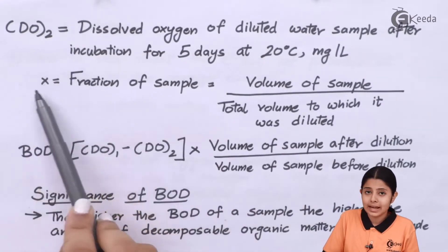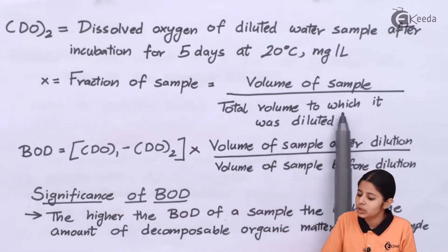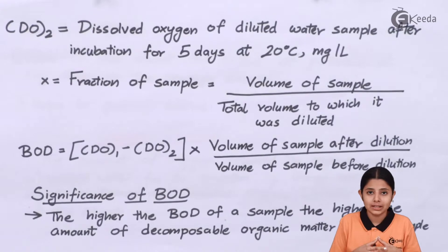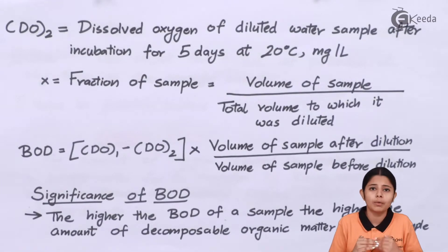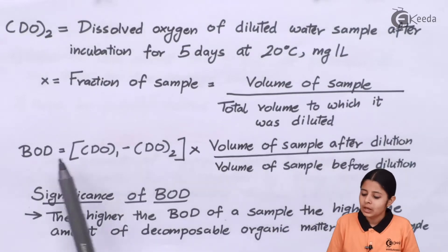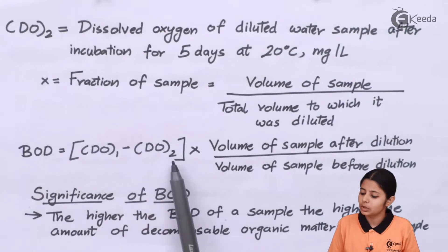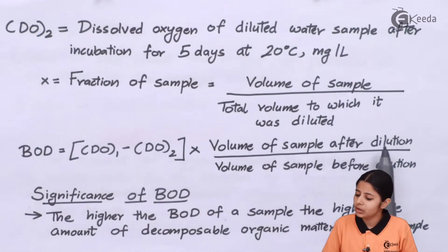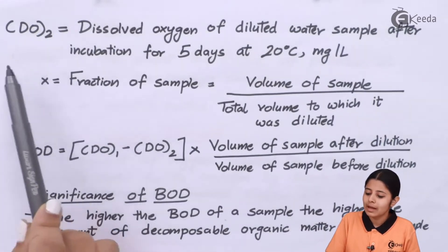X is the fraction of the sample — that is, the volume of sample upon the total volume to which it was diluted. The sample taken won't be the entire water sample, just a part of it, which may contain high or low amounts of organic matter. Therefore, BOD equals DO1 minus DO2 multiplied by the volume of sample after dilution upon volume of sample before dilution, which means BOD = (DO1 − DO2) × X.